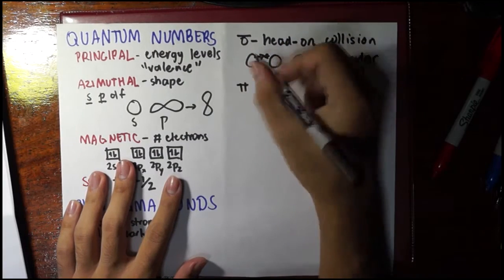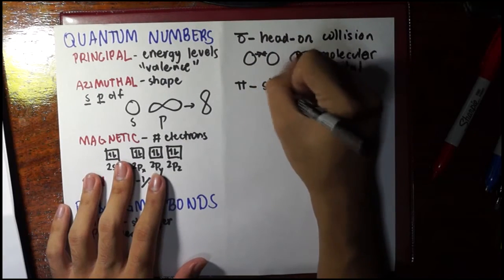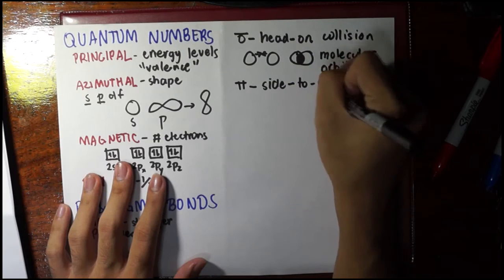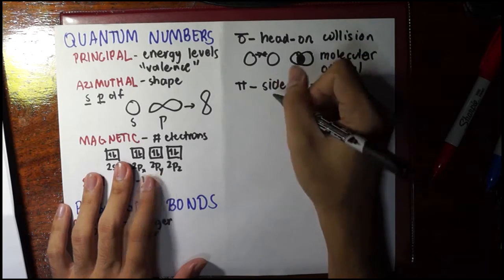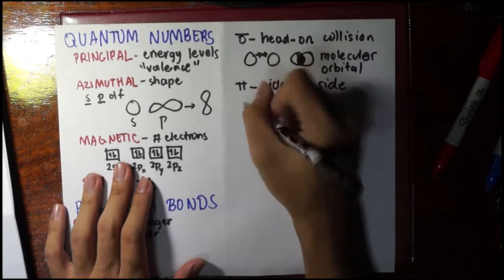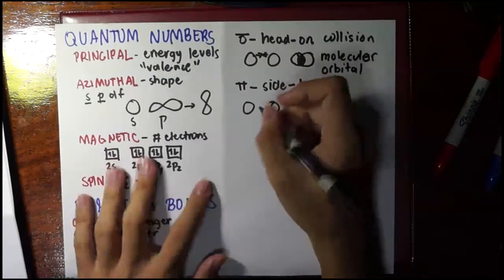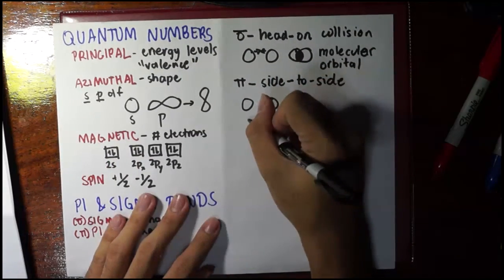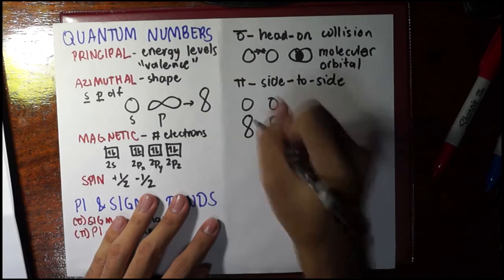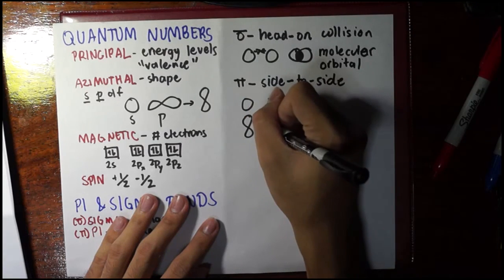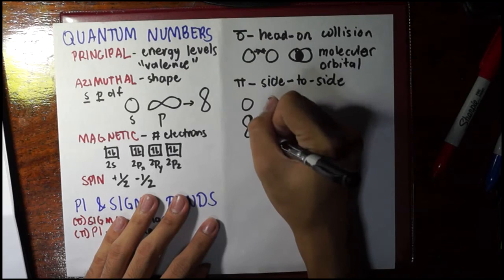Unlike, for example, we have a pi—this is only a side-to-side collision. You cannot have this with the s orbitals because they have no side. The ones where you have a side are the p orbitals. You can say that this part, the part here and here, are the side parts of the pi bond.